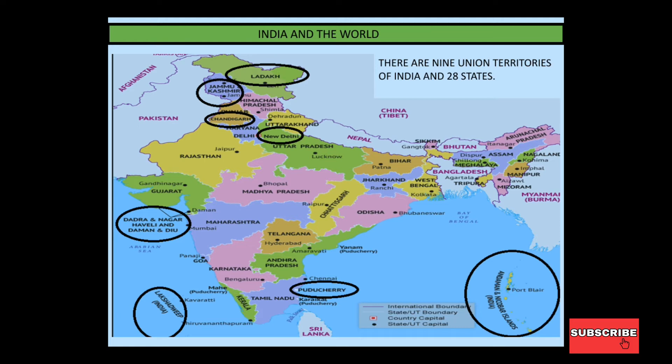So in total, how many Union Territories are there? Delhi is neither a pure Union Territory nor a state, but we still count it as a Union Territory — you must remember that. There are 28 states, and you should know which they are.